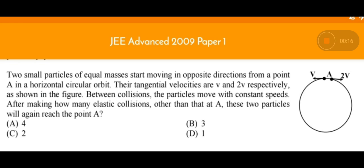We have two bodies of equal masses moving in opposite directions with velocities v and 2v. Their tangential velocities are v and 2v. Between collisions the particles move with constant speed, and these particles will collide.